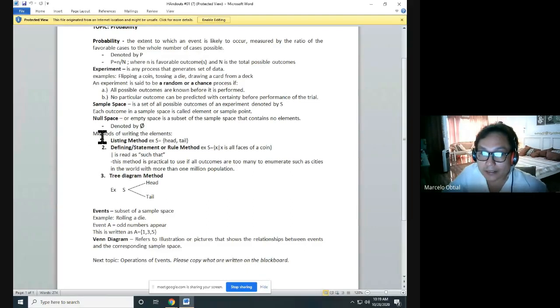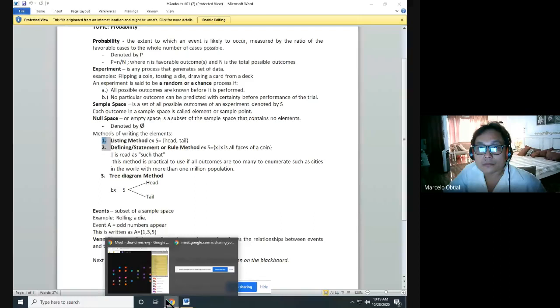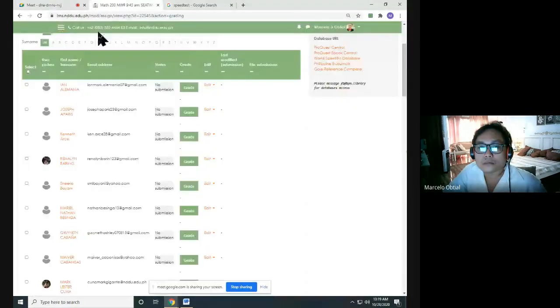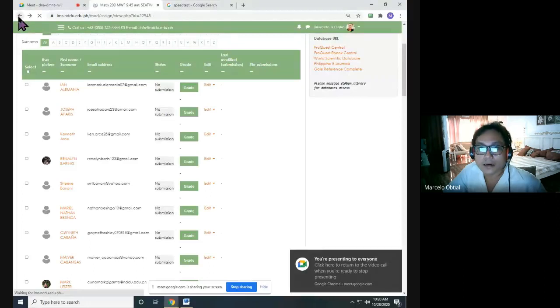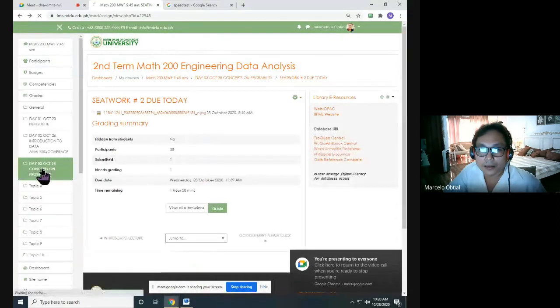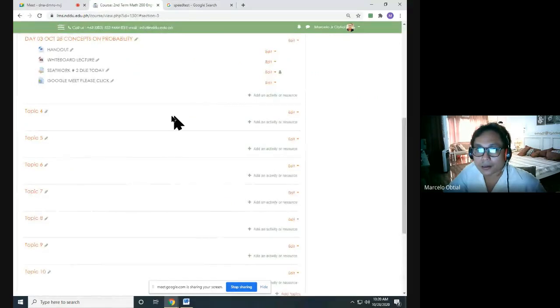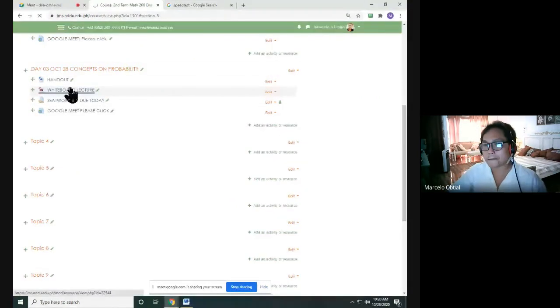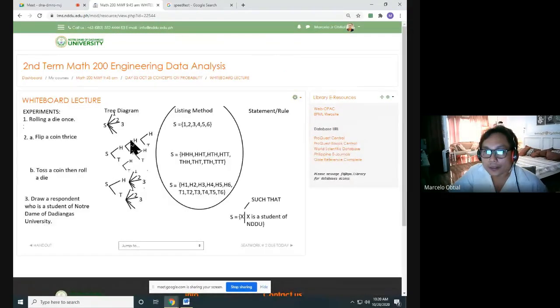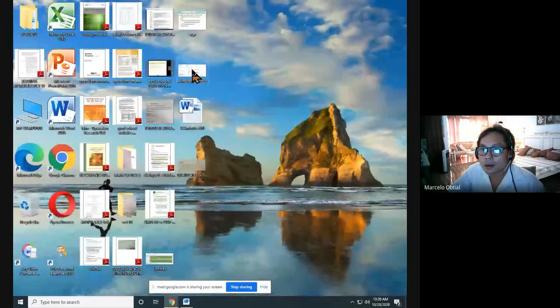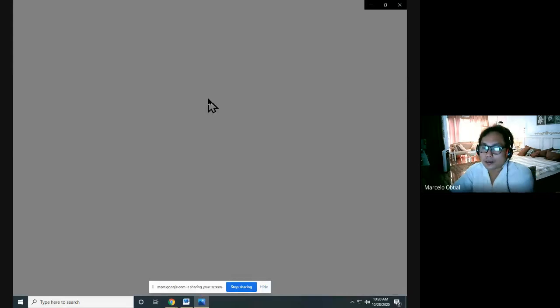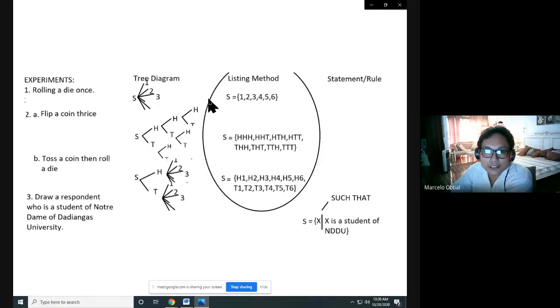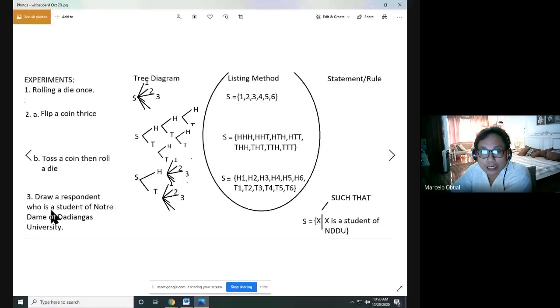Now, let's discuss the methods of writing of elements. There are three: we have the listing method, defining statement rule, and tree diagram. Okay, let's open the whiteboard. I've attached it to our day 3. Let's open this.